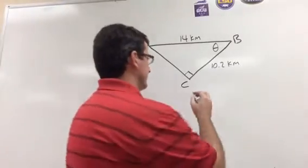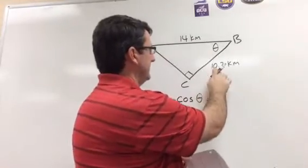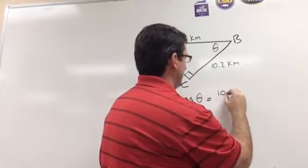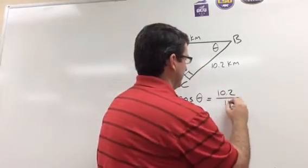So we're going to use cosine. Cosine of theta equals the length of the adjacent side, which is 10.2 kilometers, divided by the length of the hypotenuse, which is 14 kilometers.